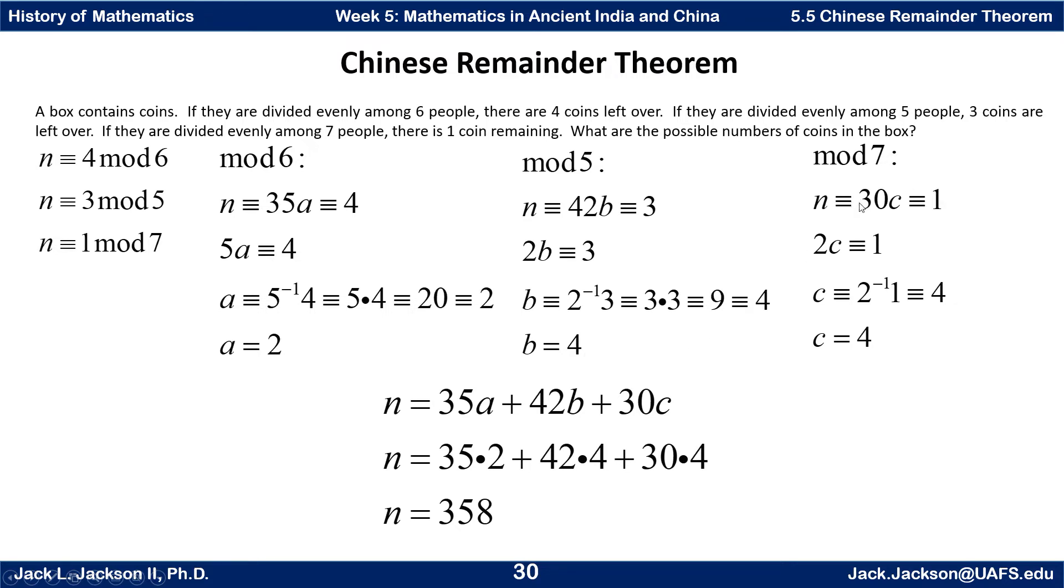Working in mod 7 here, 30C is congruent to 1. Divide 30 by 7, and you get a remainder of 2. So we need to multiply both sides by 2 inverse. We need to find something that we multiply by 2 to turn that into a 1. Here I claim it's 4. 4 times 2 is 8. Mod 7 is 1. So this is 4. So now we said we want n to be 35A plus 42B plus 30C. We plug in A is 2, B is 4, and C is 4. And we get 358.